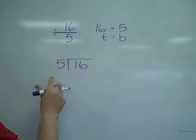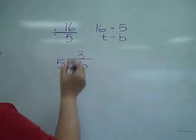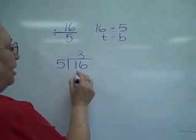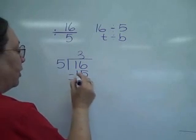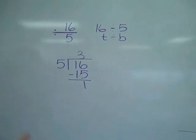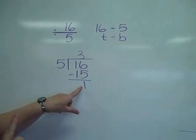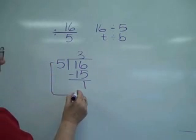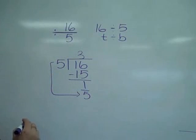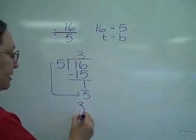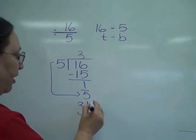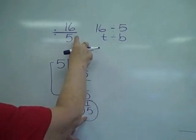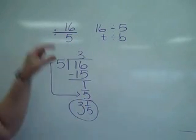So let's look at this division. 5 goes into 16, 3 times. Subtracting, I get a 1. That 1 becomes the top of my fraction, and the bottom is the 5.